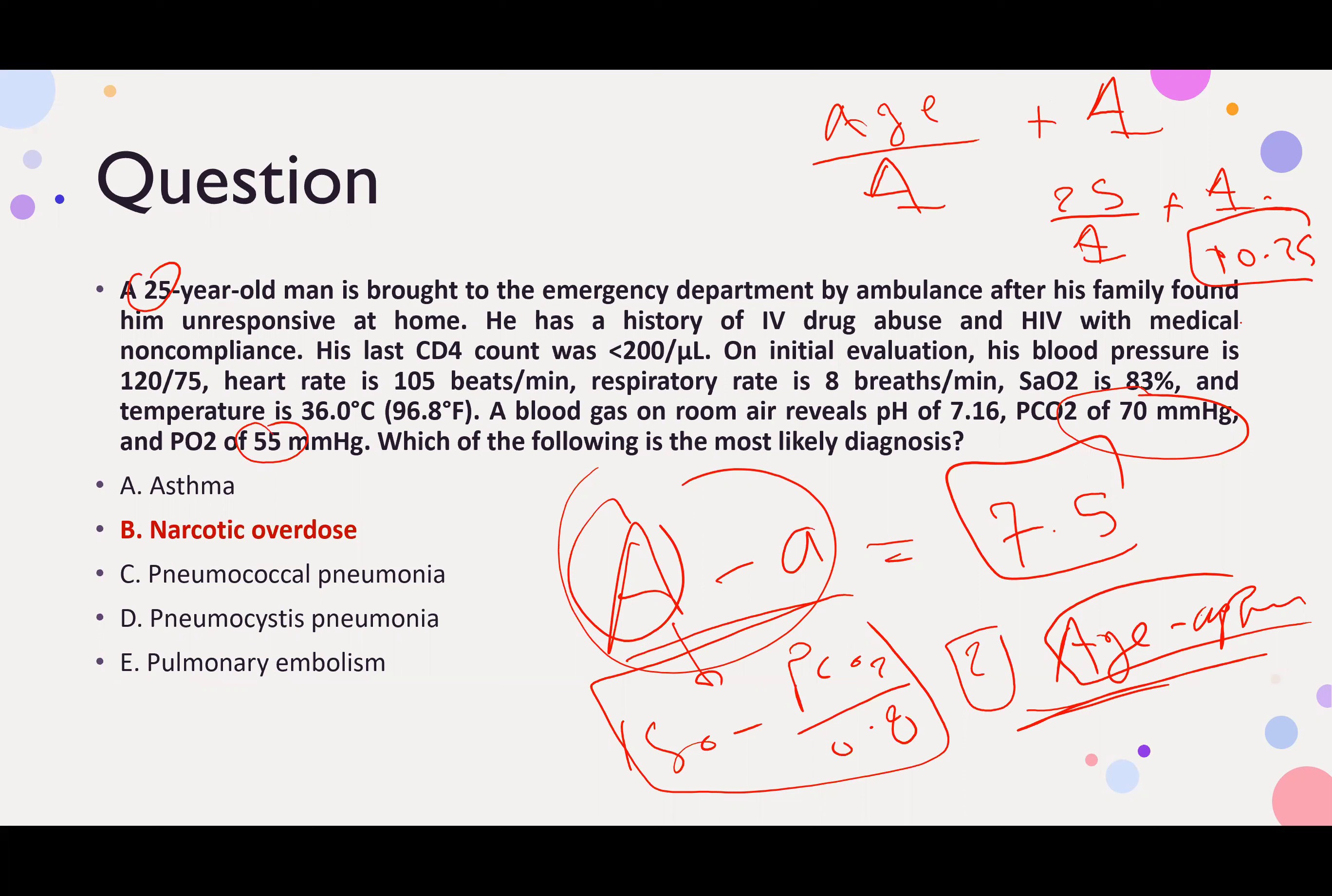So the AA gradient is normal to be 10, but what we found is 7.5. What does it mean? It means low AA gradient or otherwise normal.